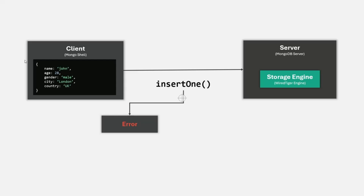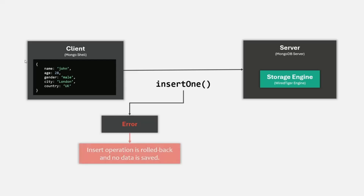A transaction either succeeds as a whole or it fails as a whole. There will not be any partial insertion, update, or deletion of data. Either the insert, update, or delete will happen for the complete data or no data at all. This is what atomicity means. In simple words, when we are inserting a document in a collection, either the document will be completely inserted with all its fields or it will not be inserted at all. This is true for update and delete as well — the operation will be rolled back and no data will be saved.